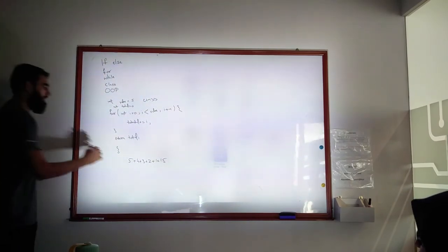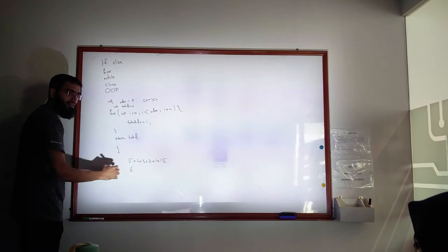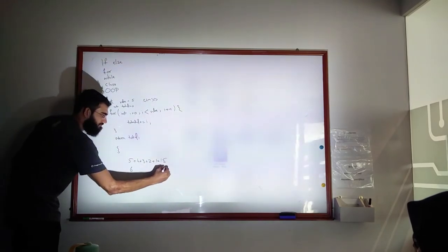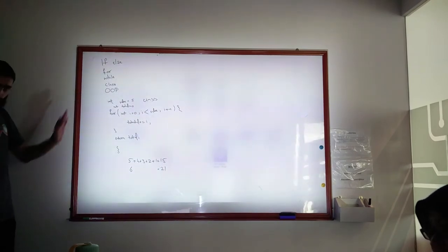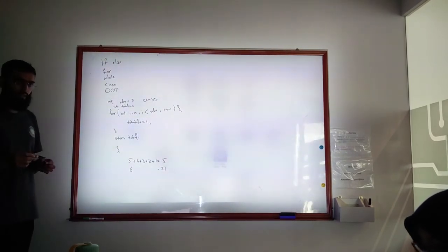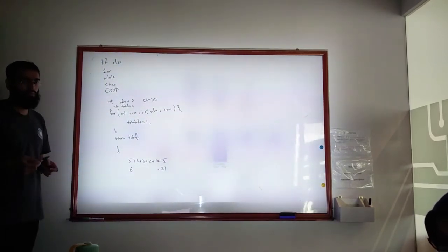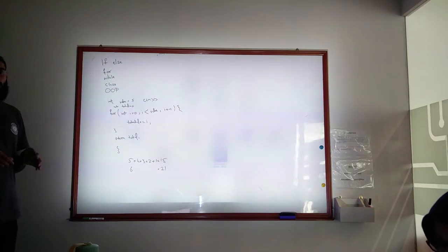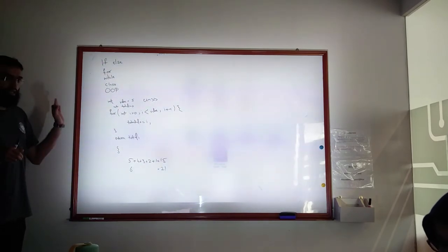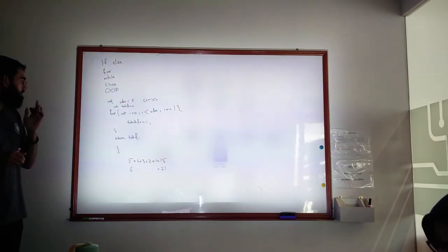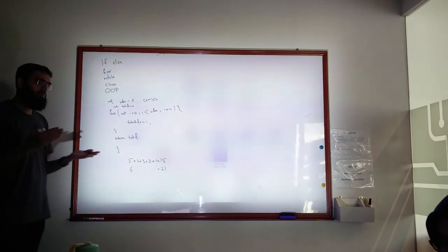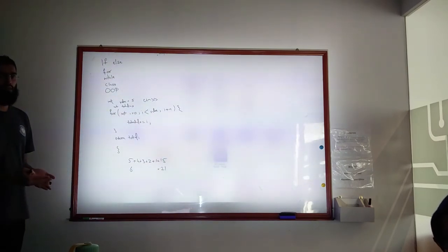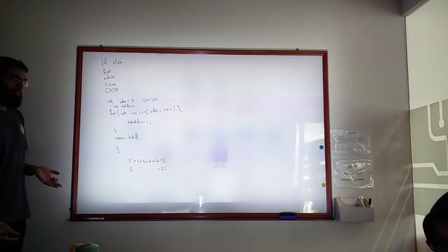Agree? Any confusion? If I give six, then it will do 21 — agree? So now we've revised the concept of a for loop, pseudo code, and how you write a programming solution. I need to fix one problem: I want to ask the computer, can you do a sum for me? I will give you one integer value and give me the sum up to that value.